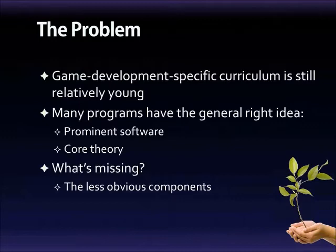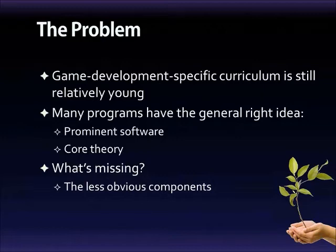Students need to know the tools - the software they'll be expected to work in - and the syntax they'll communicate in. We want artists to be proficient in at least one 3D modeling package, and programmers to be fluent in at least a couple of major languages. Additionally, no matter which area of specialization, students need a strong background in theory to critically think about their craft and develop an iterative process grounded in the core foundations of their discipline. Game designers, for instance, should be familiar with concepts like player agency and emergent systems.